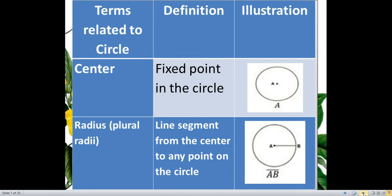Next term is radius. The plural of radius is radii. It is a line segment from the center to any point on the circle. So here is the illustration. Line segment from the center to any point on the circle. So this time you have radius AB, or line segment AB.